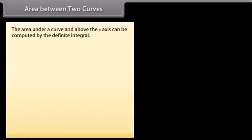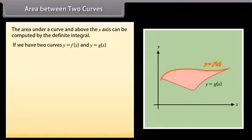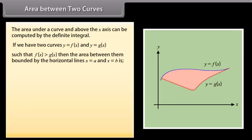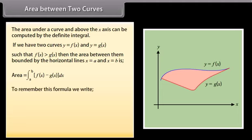Area between two curves: The area under a curve and above the x-axis can be computed by the definite integral. If we have two curves y = f(x) and y = g(x) such that f(x) ≥ g(x), then the area between them bound by the vertical lines x = A and x = B is: Area = ∫ from A to B of [f(x) − g(x)] dx. To remember this formula: Area = ∫ from A to B of (top − bottom) dx.